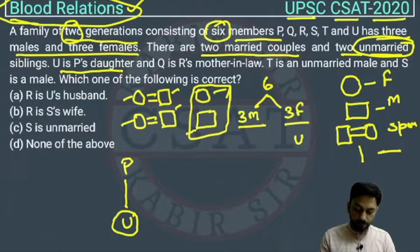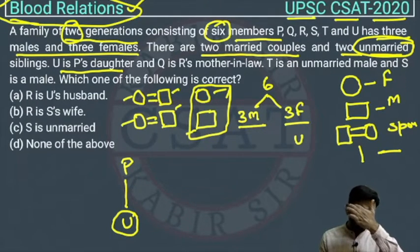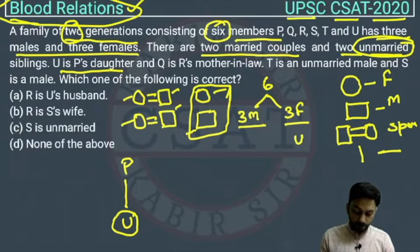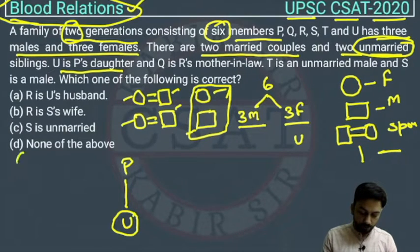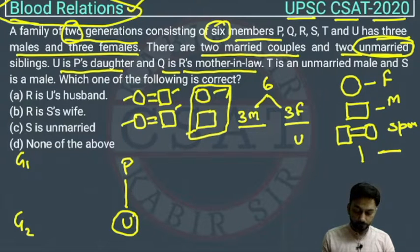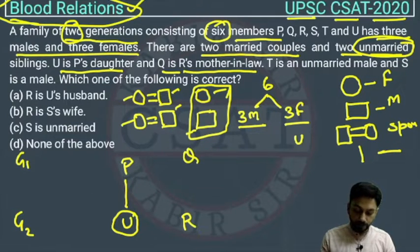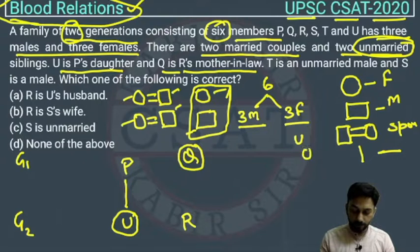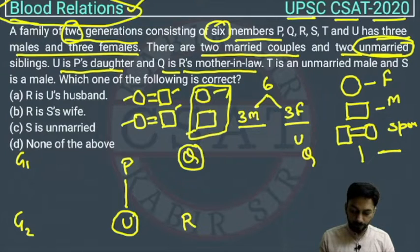Q is R's mother-in-law. Since there are only two generations, Q will come in generation 1 as the mother-in-law, and R will come in generation 2. We now know the gender of Q — she is female. So we write Q in the female section. But we don't know the gender of R yet.